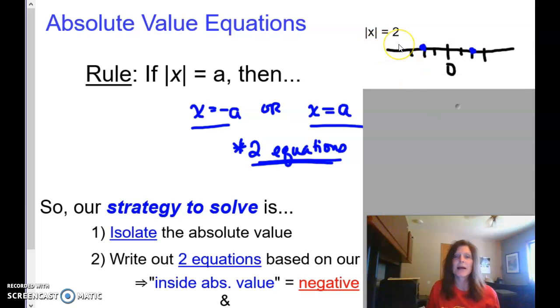I have the absolute value of x is equal to 2. What that is asking me to do is find a value of x whose distance from 0 on the number line is 2 units. So the absolute value is measuring distance from 0, and it's always a non-negative answer. If I'm trying to find that x whose distance is 2 units, that means I can go to the left and end up at negative 2, or I can go to the right and end up at positive 2.